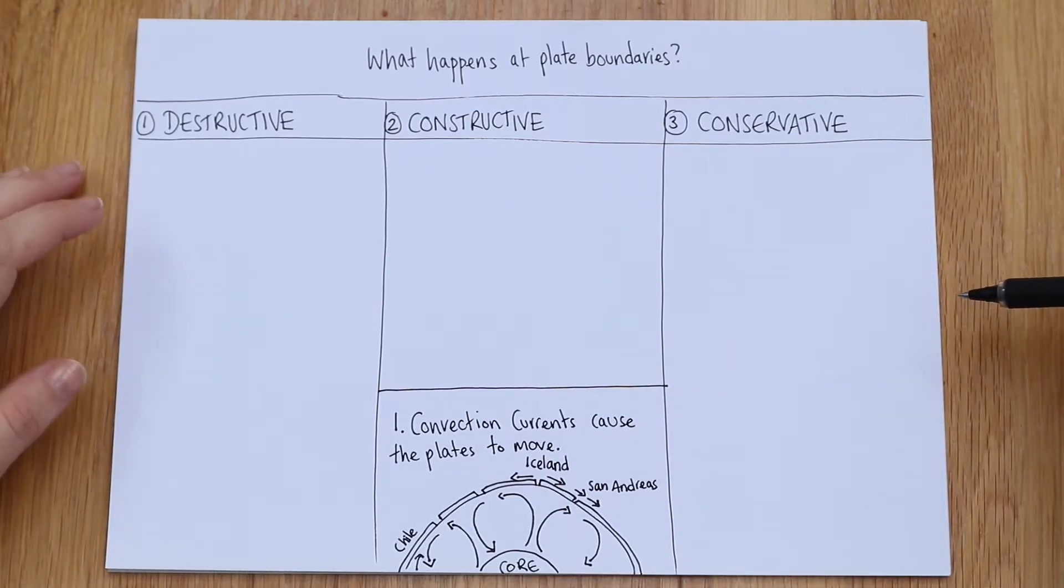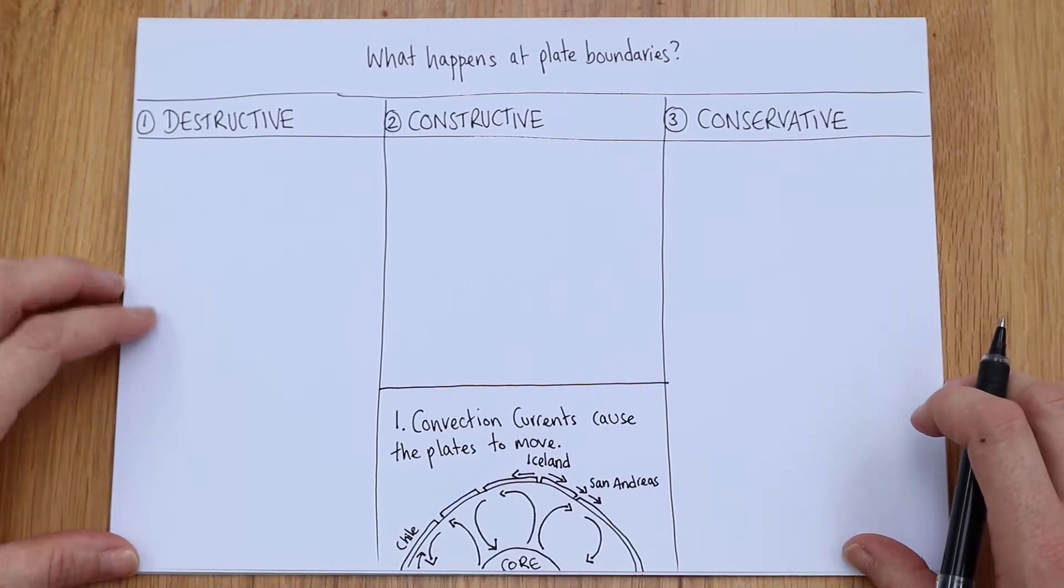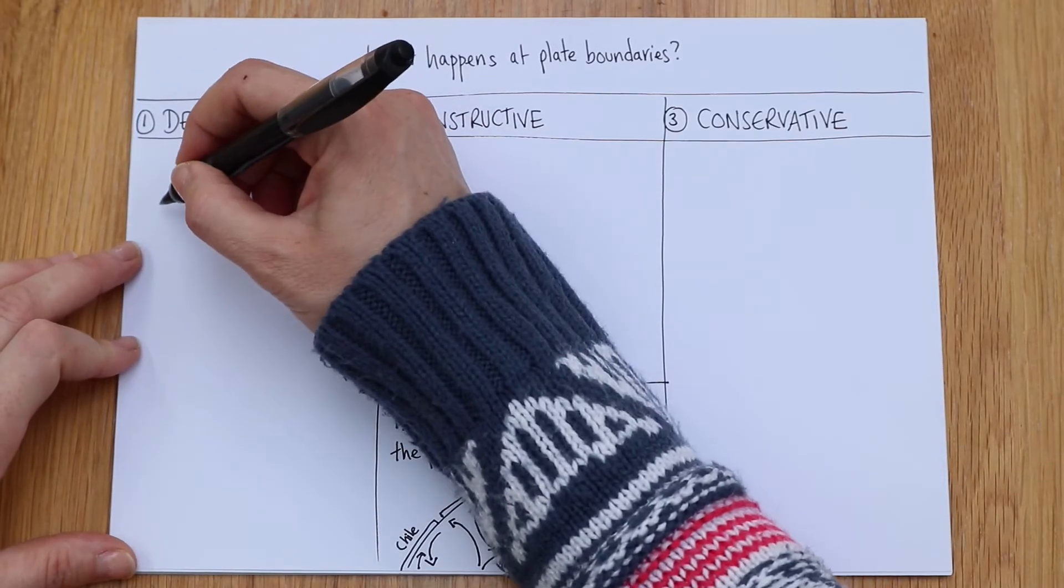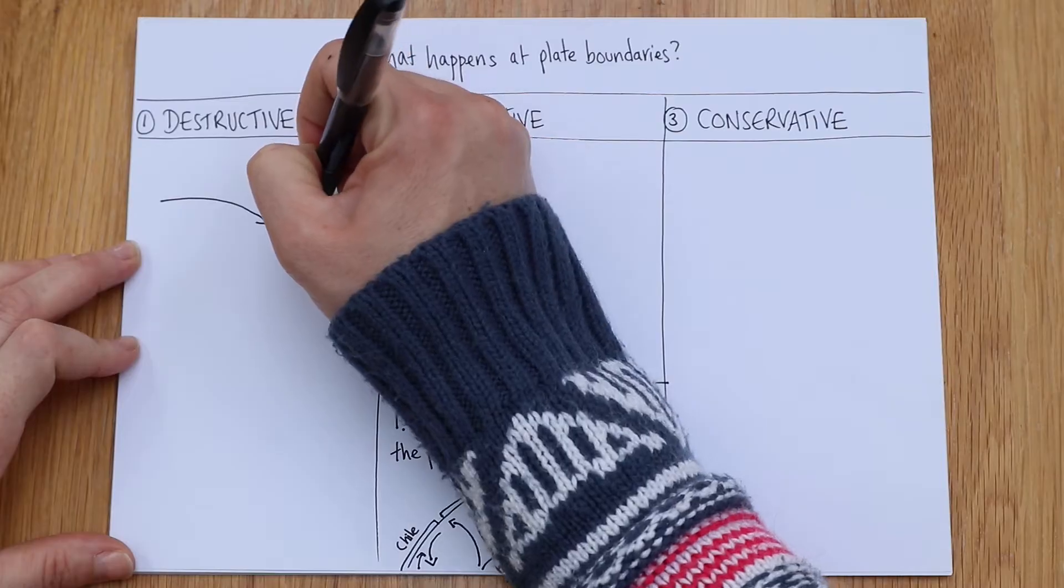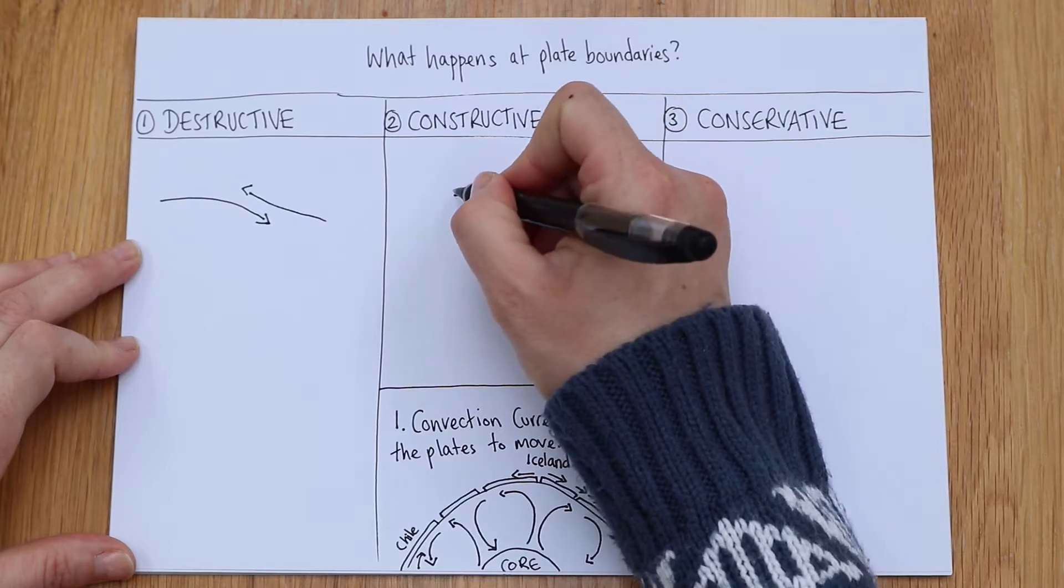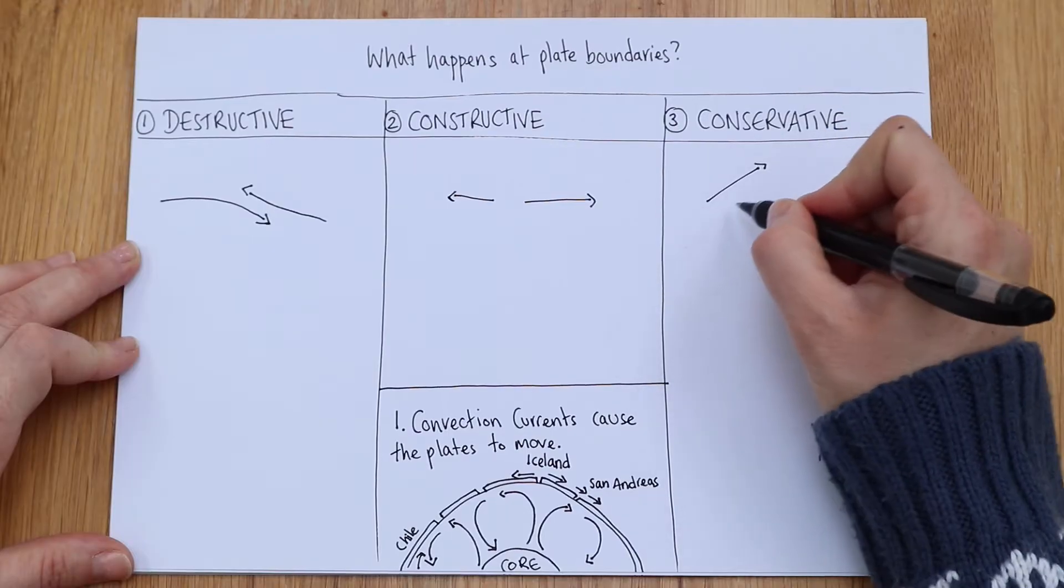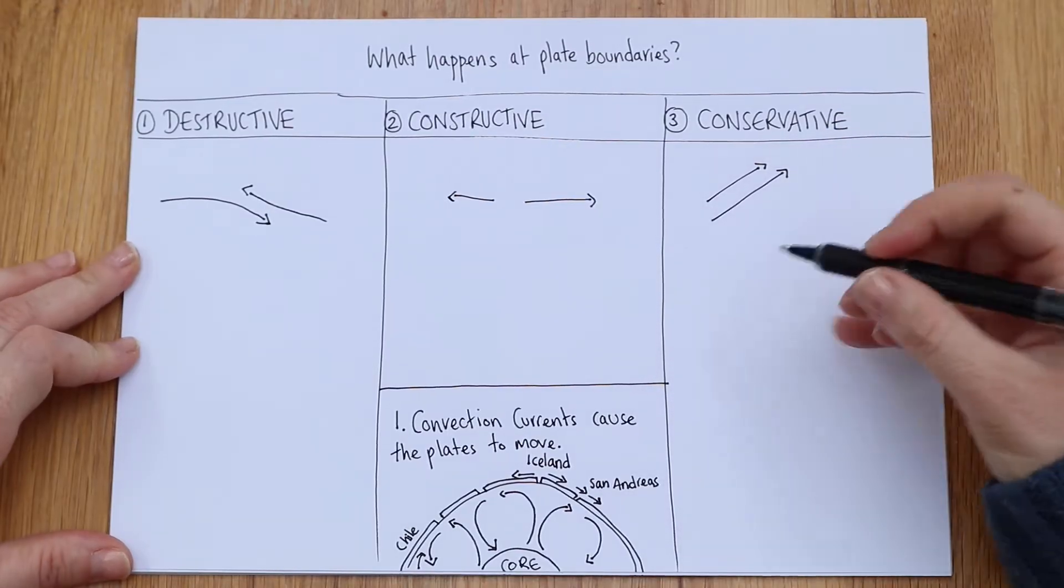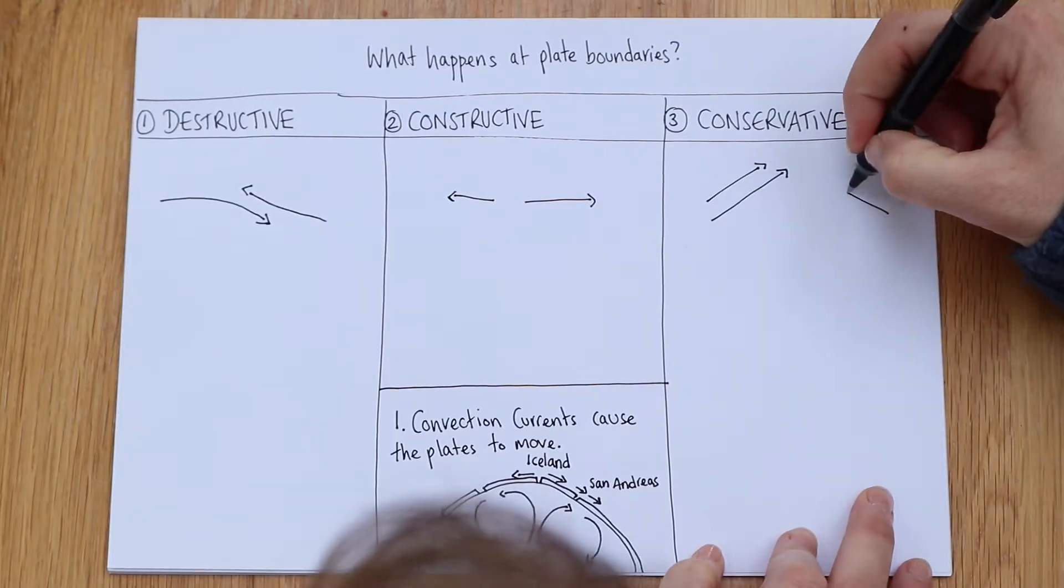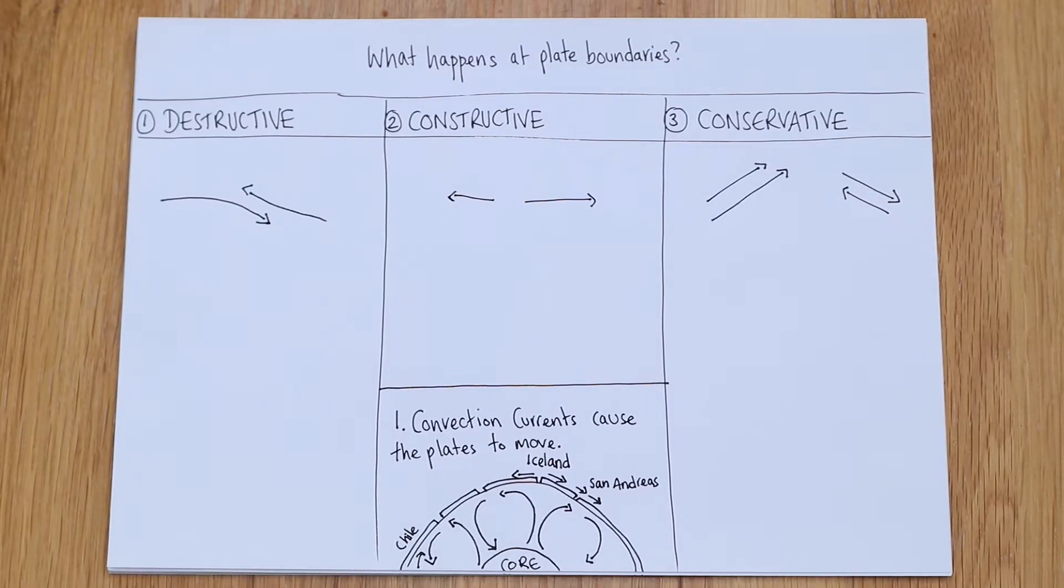Any question at all that you get about plate boundaries, always begin with convection currents and how they cause the plates to move. That is your beginning point. Once you've established that, then you can go into detail about the three different types of plate boundary movement. How I'm going to do this is with arrows. For me very simply, I'm just going to use arrows and then we'll label them. So you've got a destructive, constructive, and conservative. This is the only slightly odd one because they can either be traveling in the same direction at slightly different speeds or they can sometimes be traveling in opposite directions.